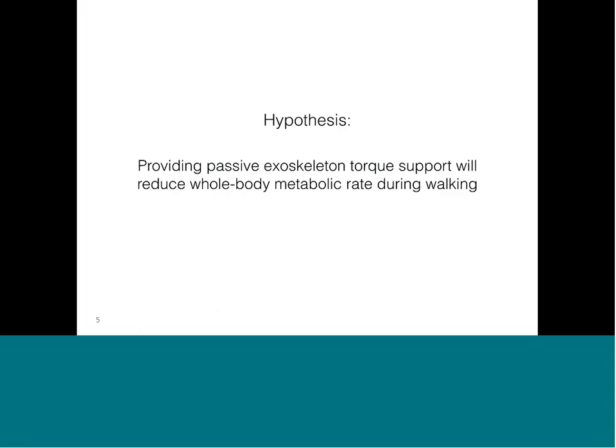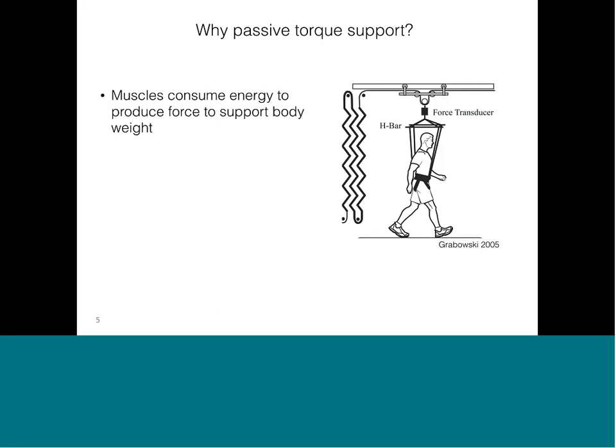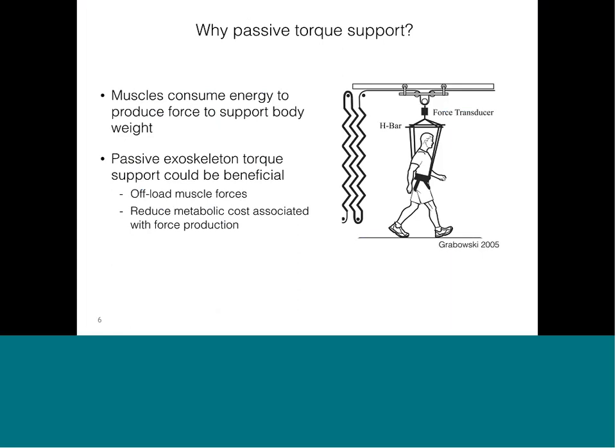We previously hypothesized that providing passive exoskeleton torque support without injecting any net work into the user would reduce whole-body metabolic rate during walking. This hypothesis was based on ideas from prior musculoskeletal simulations of human walking suggesting there is a large metabolic cost associated with producing force with muscle to support body weight. We thought that providing passive exoskeleton torque support would offload force in muscle for supporting body weight and reduce the associated metabolic cost.